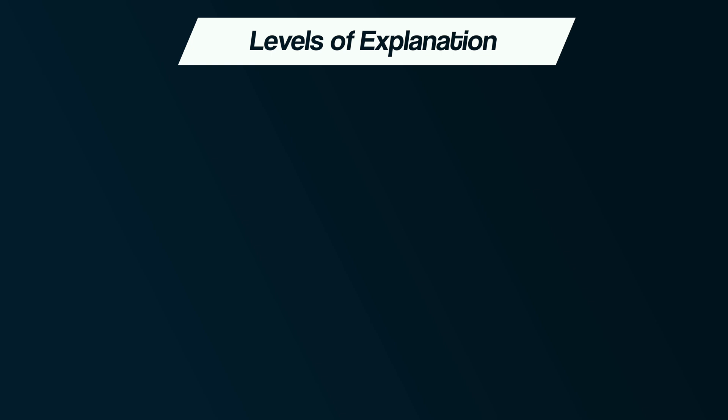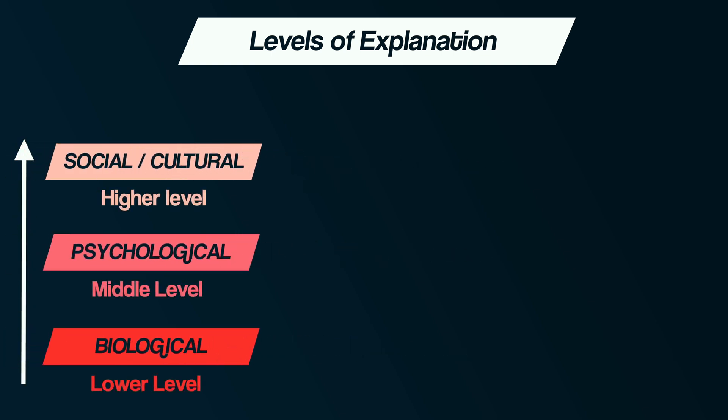Another way of considering the holism and reductionism debate relates to what's called levels of explanation. As the name suggests, there are different levels at which behavior can be explained. Reductionism can be viewed as a hierarchy moving from the lowest, most basic biological level, through to a broader middle psychological level, and then to a wider sociological level.